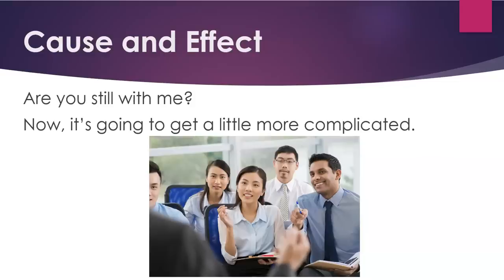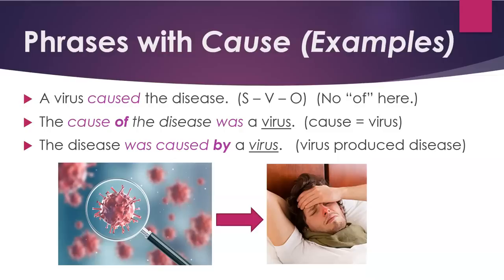Are you still with me? Now it's going to get a little more complicated. Here are some phrases with cause. For example: 'A virus caused the disease.' This is simple subject, verb, object — there's no 'of' here. 'The cause of the disease was a virus' — in this case, the cause equals the virus. 'The disease was caused by a virus' — in this case, the virus produced the disease.